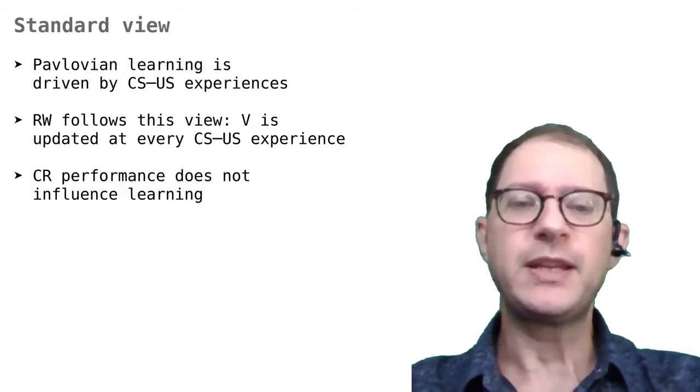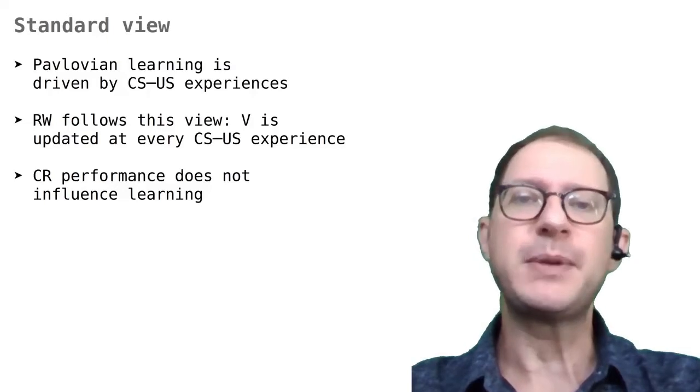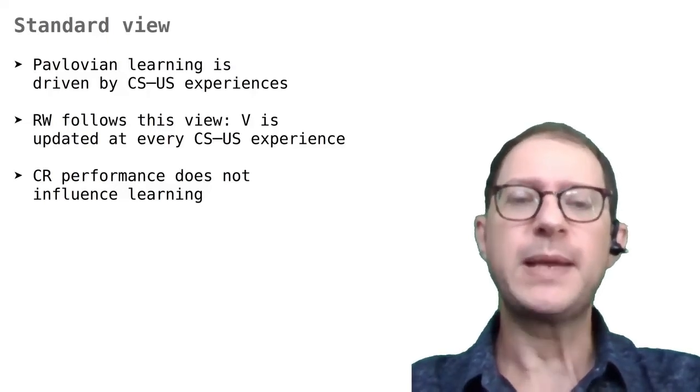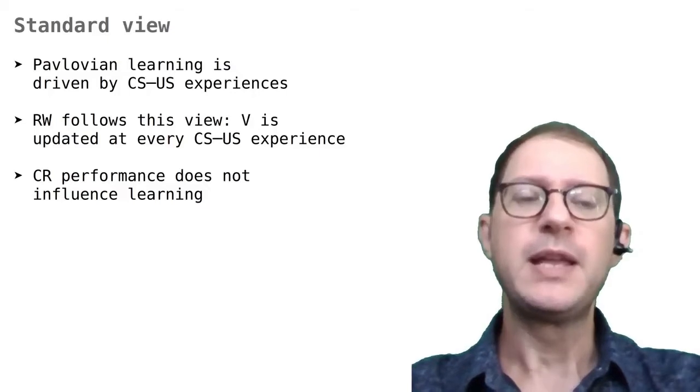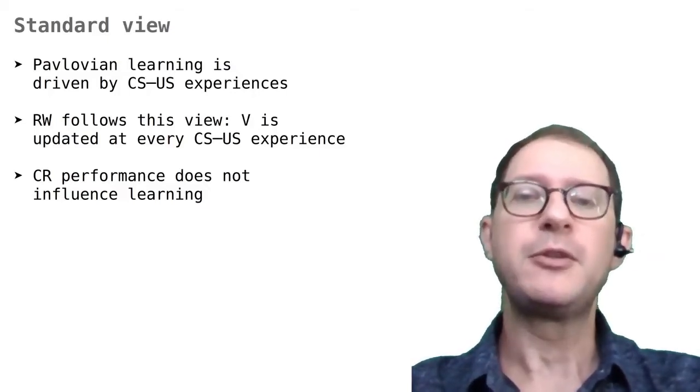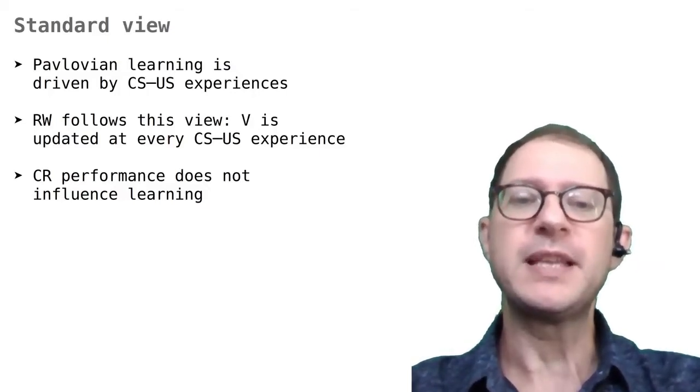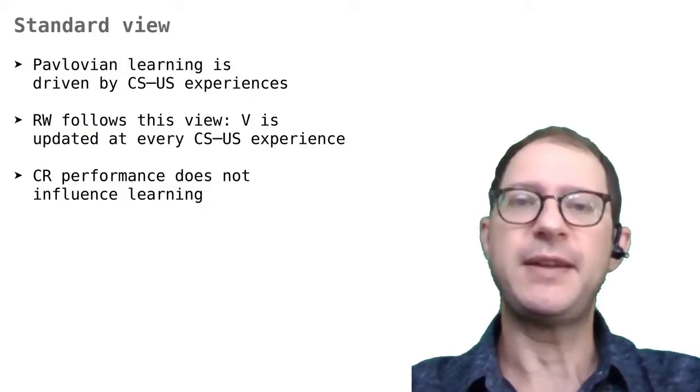Most theories of conditioning take the same assumption. For example, the Rescorla-Wagner model updates the associative strength V anytime a CS-US experience occurs. What does not matter according to the standard view is whether a CR or response is performed or not during the CS-US experience. For example, we think that the dog learns from a Bell-Food experience even if during that experience it does not salivate.